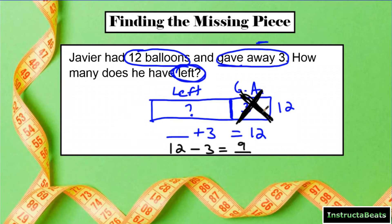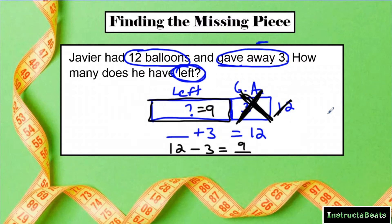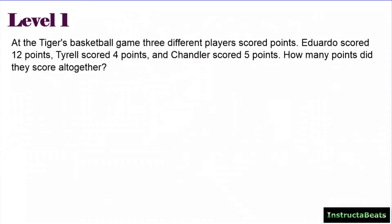12 minus 3 equals 9. If you take away 3 from your 12, this is how much tape diagram you have left, and that would have to be equal to 9. Nine plus 3 gives you a total of 12. So it's just visually showing you what you can do.